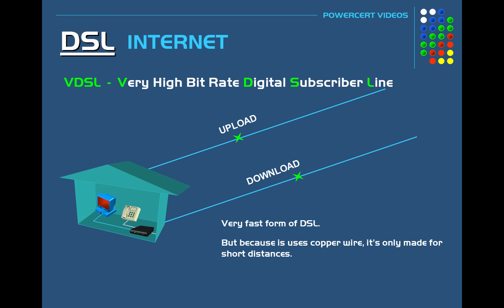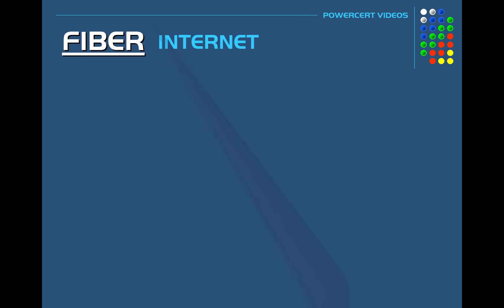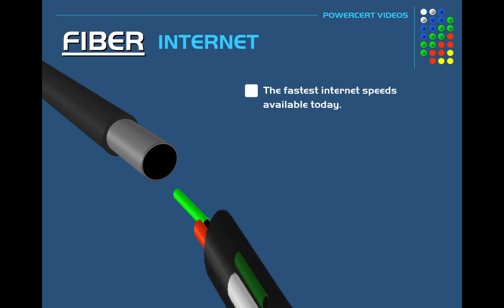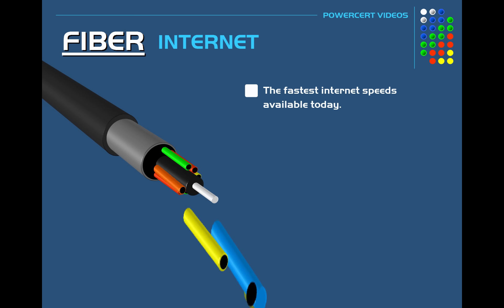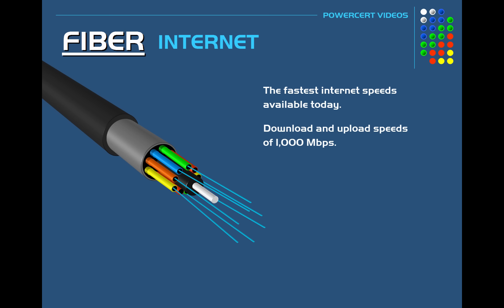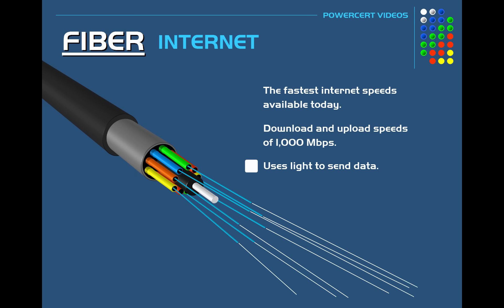VDSL is roughly three times faster than ADSL. Finally, there's fiber internet. Fiber offers the fastest internet speeds available today, with download and upload speeds of 1000 megabits per second — so it's very fast. The reason why it's so fast is because it uses light to send data running through fiber optic cable, which is already used as the backbone of the internet.